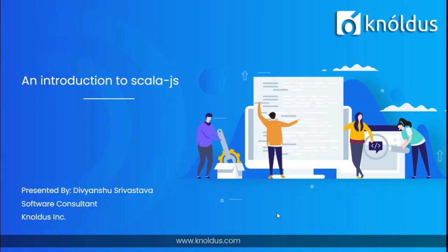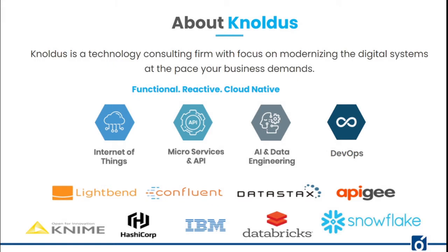Let me just explain about Noldus, the company I'm working at. It's more than just an organization. You can see many technologies here like Internet of Things, Microservices, AI, DevOps, and many more. Noldus is a team of passionate technologists with a product mindset. We work along with businesses to deliver solutions at the speed of competitive advantage. Our main capabilities are around Internet of Things, Microservices, AI, DevOps, Data Science, and many more. We also have huge partnerships with great partners like Lightbend, Confluent, Snowflake, Databricks, and many more.